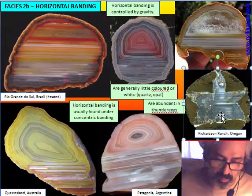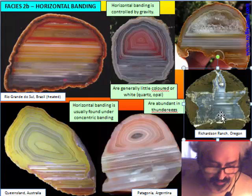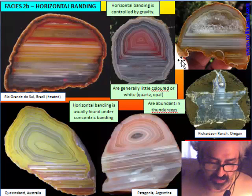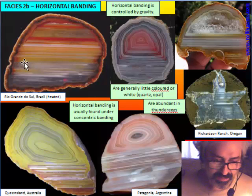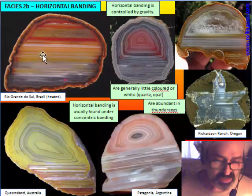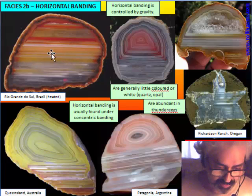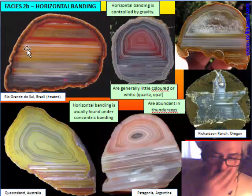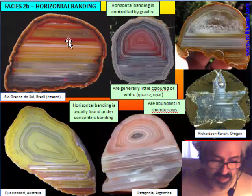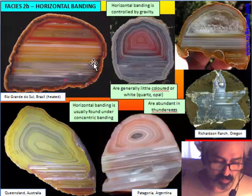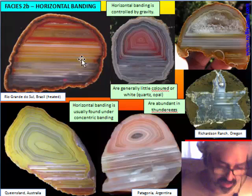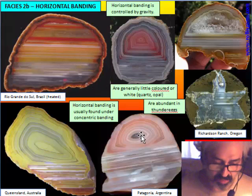Horizontal banding is also very common in thundereggs. It is quite clear that horizontal banding is controlled by gravity — the flattening is so perfect that it provides a good way to determine the original orientation of the nodule in the deposit.